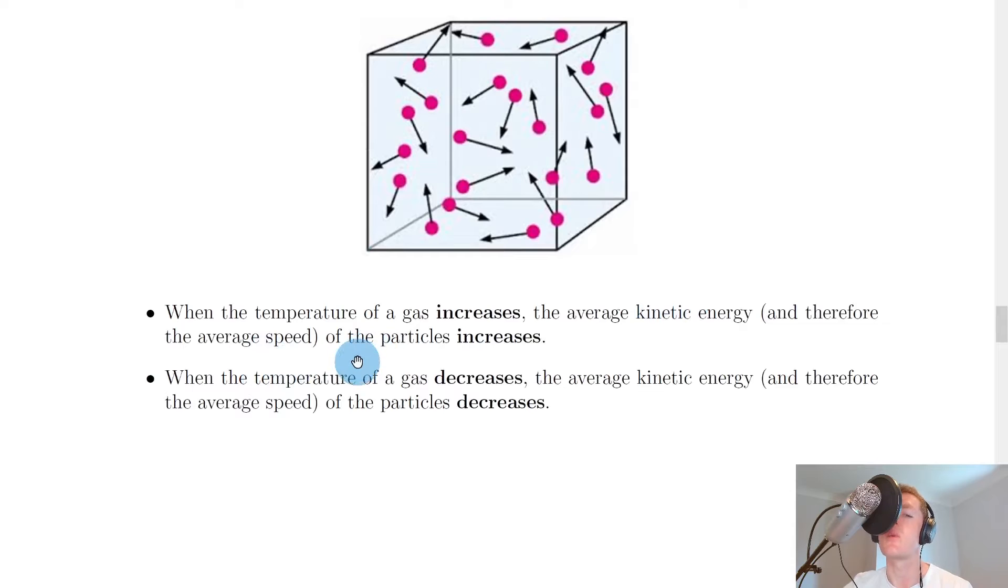And it then goes on to say that when the temperature of a gas increases, the average kinetic energy and therefore the average speed of the particles increases. But the opposite is also true, so when the temperature of a gas decreases, the average kinetic energy and therefore the average speed of the particles decreases.